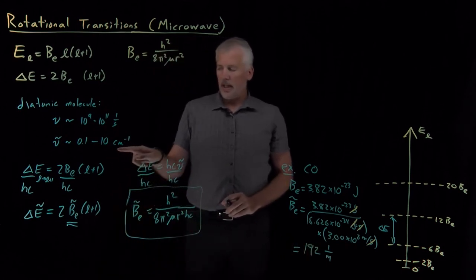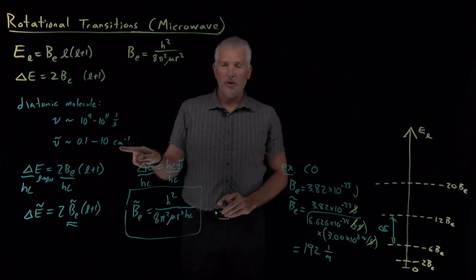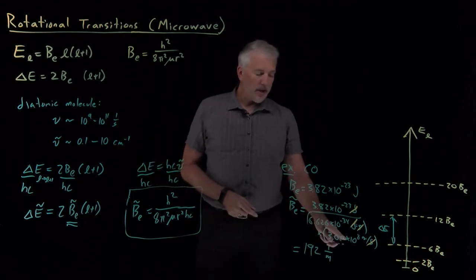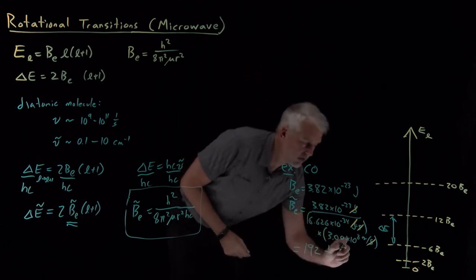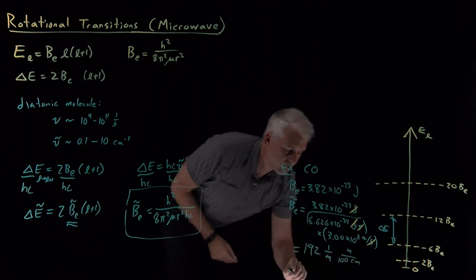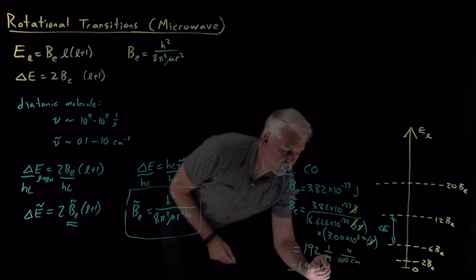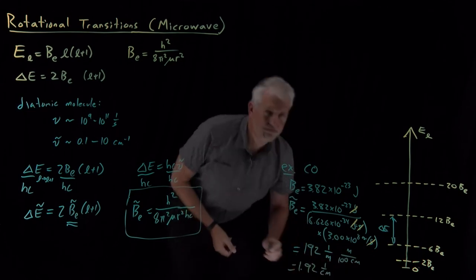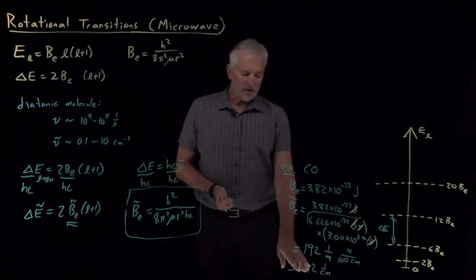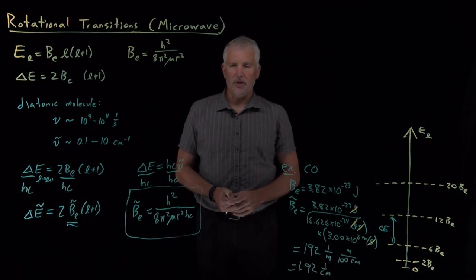As we've seen, we tend to like wave numbers in units of inverse centimeters rather than inverse meters. So if I divide by 100 to convert meters into centimeters, that's going to work out to be 1.92 inverse centimeters. So the rotational constant in units of wave numbers is 1.92 inverse centimeters.